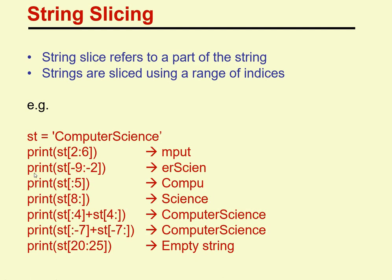For print(ST[-9:-2]), we start at index -9 and go up to but not including -2. The ending index is not included, so we get the characters from index -9 through -3.